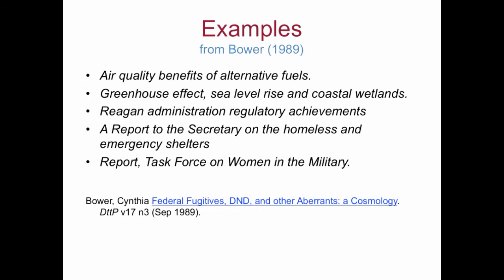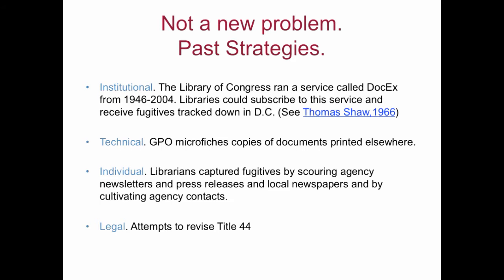Here are some examples from a 1989 study by Cynthia Bauer published in Documents to the People. Bauer's paper is a really good one and I recommend it for its scope and scholarship, and also for the clear and insightful way she defines the problem back in 1989. The subjects of these titles are still relevant and sound current today. This should alert us that these are not ephemeral publications and that we need to capture and preserve documents like this because they provide the historical record of government actions over time. I'm showing you these older examples to demonstrate that the fugitive problem is not a new problem — it's a problem that's always been with us.